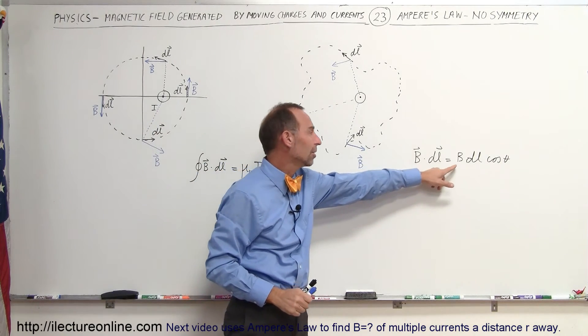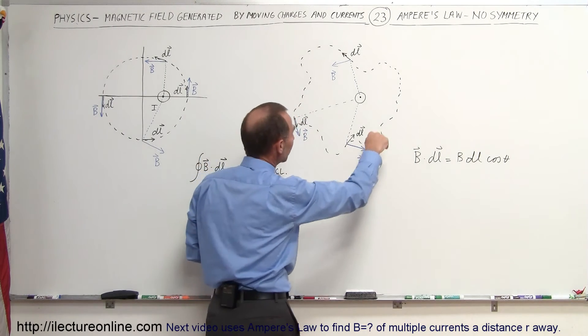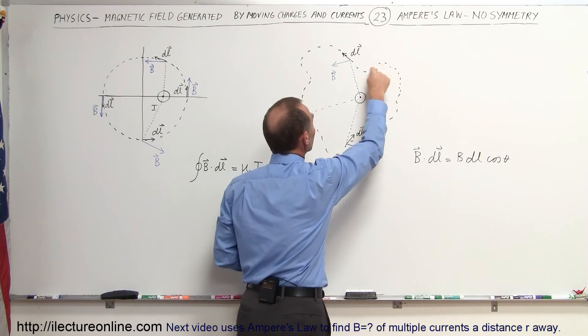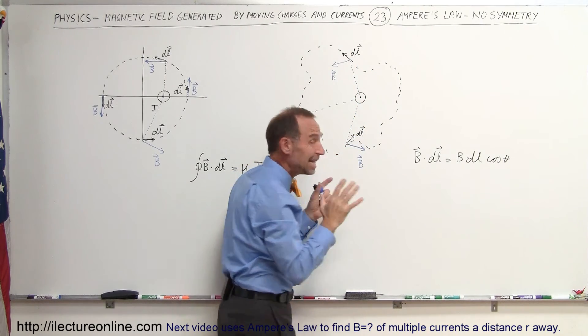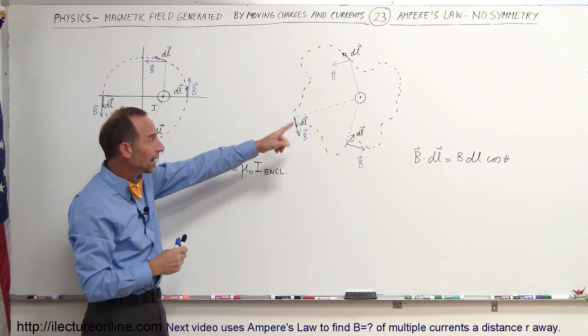Again, B dot DL equals B times DL times the cosine of the angle between them. So you would integrate all the way around constantly adjusting for the angle. But if you do a complete line integral on any path, any path, no matter what the shape of it is, if it's a closed loop path around any current, the integral, the line integral, the complete line integral B dot DL will always equal mu naught times the current enclosed by that path.